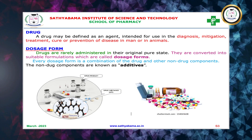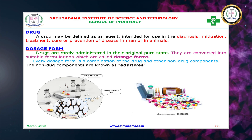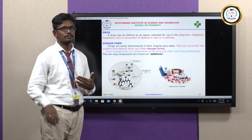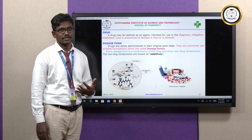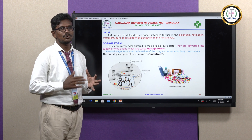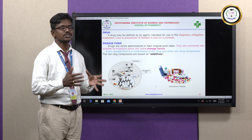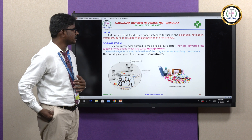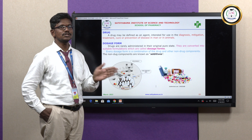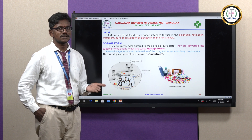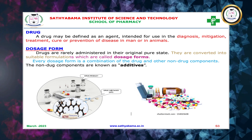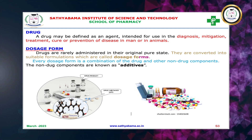Drugs are rarely administered in their original pure state. Normally, when we administer drugs in pure form, that may lead to adverse effects and toxicity, because there is no specificity of the dosage quantity. In that case, what we do is convert the drug into a suitable form — that suitable form is nothing but a dosage form. Drugs are converted into suitable formulations which are called dosage forms.